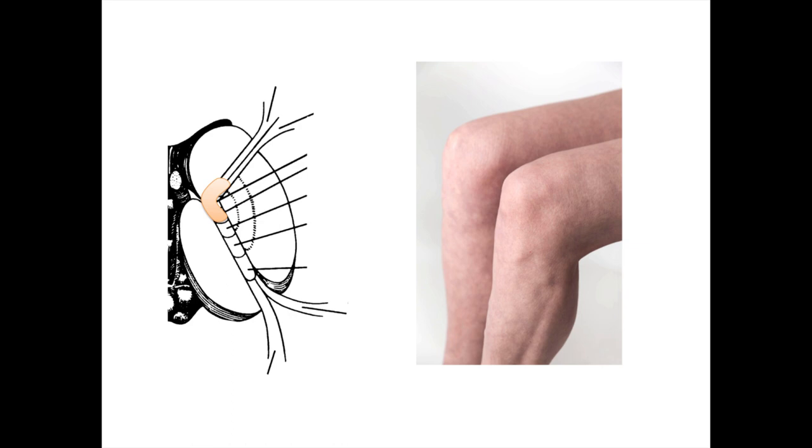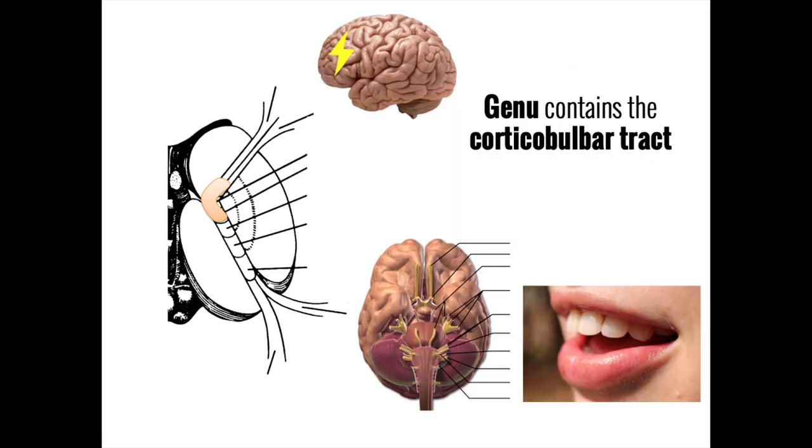The bend in the middle of the internal capsule is known as the genu, which is Latin for knee. Unlike the corticospinal tract, which travels to muscles in the body, the genu contains the corticobulbar tract which travels to muscles in the face via the cranial nerves which branch off of the brain stem.